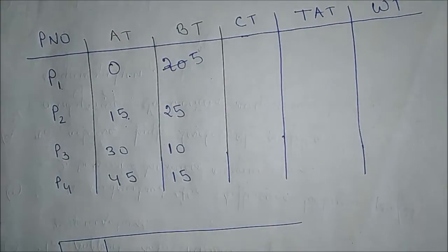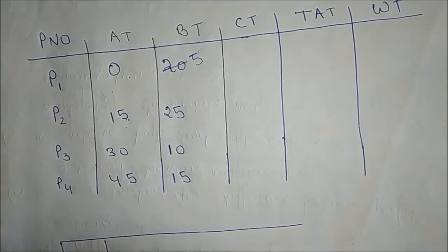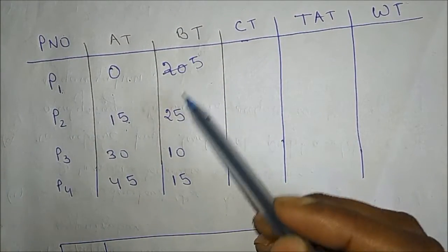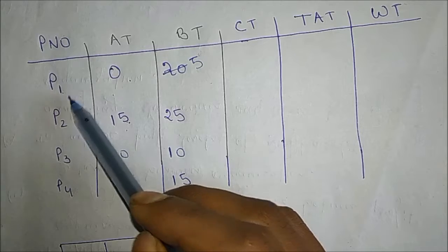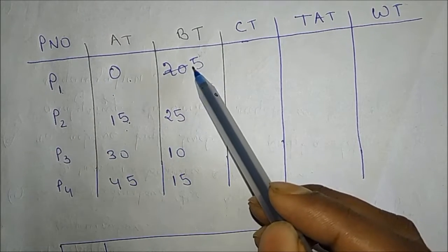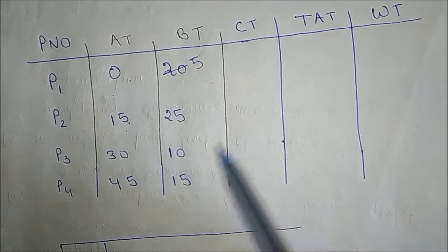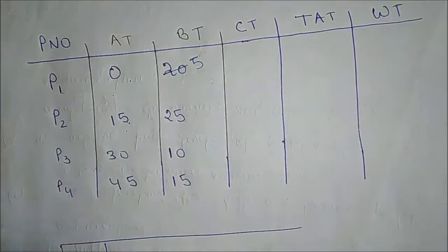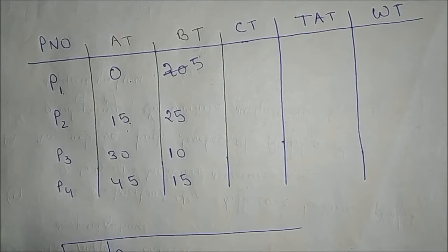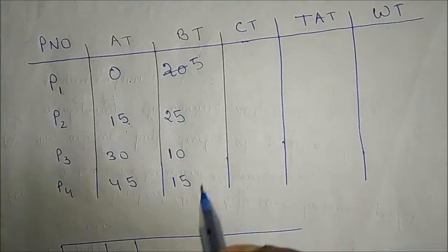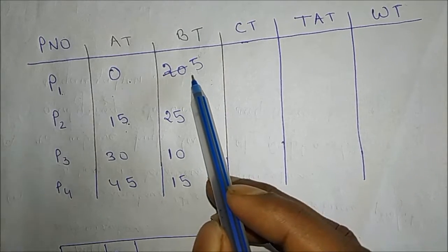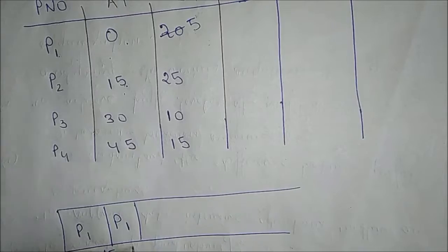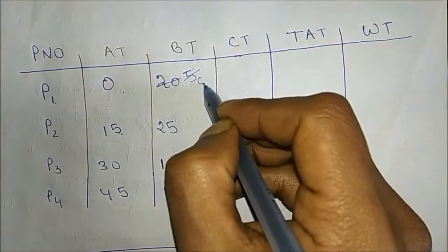Now P2 has arrived. We check which process has the shortest remaining burst time. P1 has only 5 units remaining, while P2 has a higher burst time, so P1 has the shortest remaining time. P1 runs for 5 more units, from 15 to 20, and P1's remaining time becomes 0.